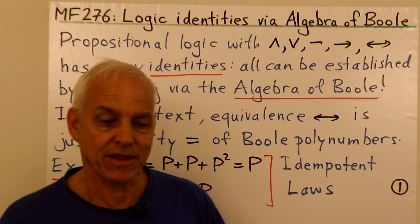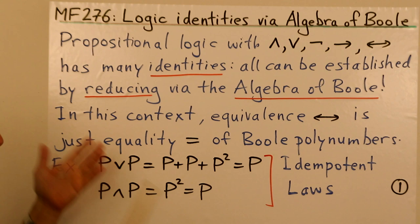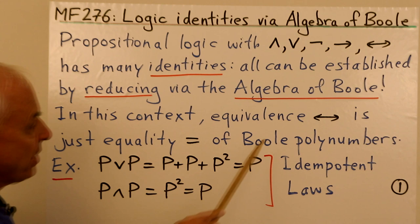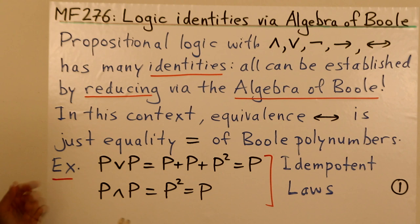In propositional logic we're concerned with these basic connectives: and, or, not, implies, and equivalence. There are many identities and they could all be established with the algebra of Bool. In this context, equivalence is really just identity of Bool polynomial numbers, represented arithmetically by an equal sign.